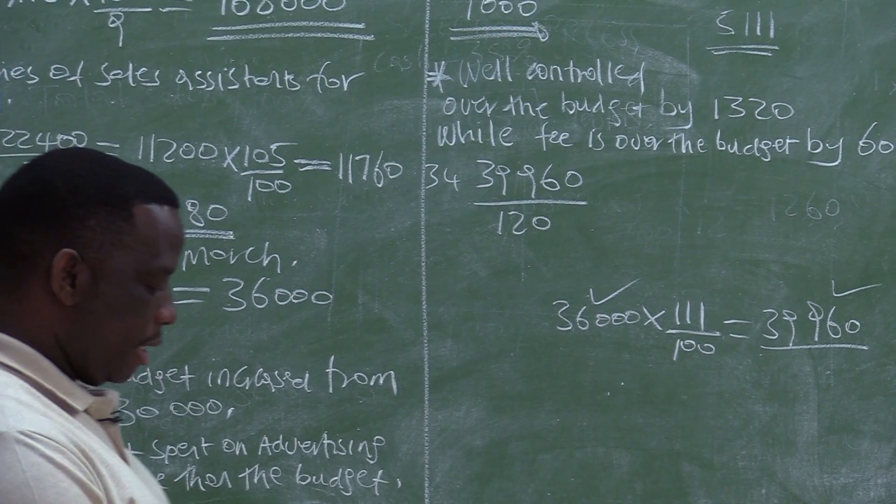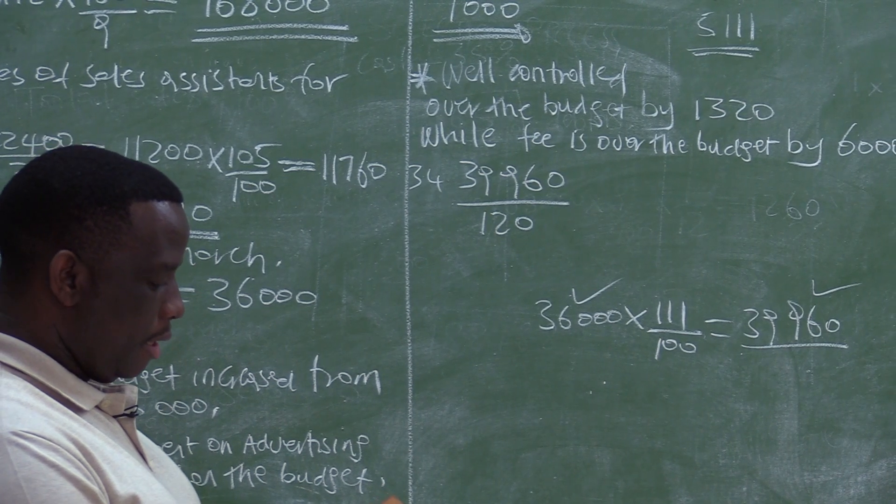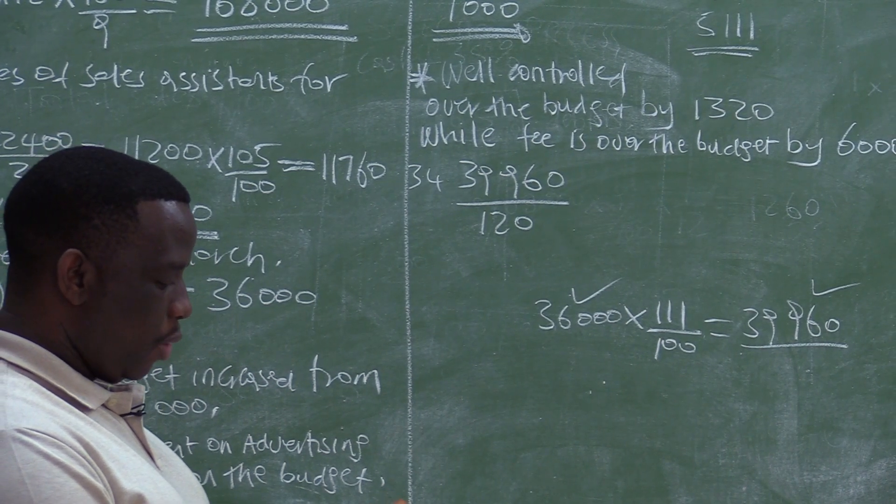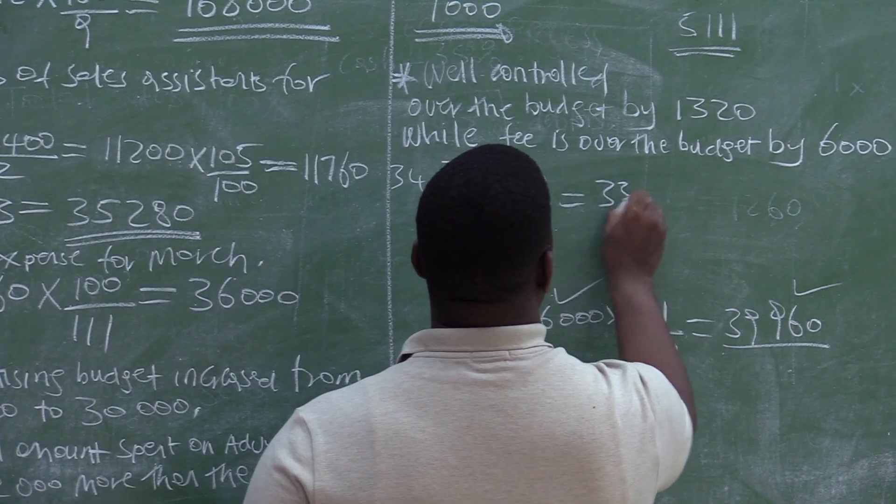$39,960 divided by 120 square meters. So each square meter cost $333.